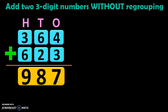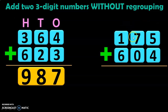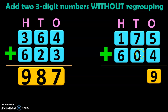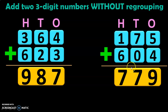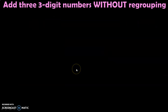Dear viewers, as this is the first topic we are seeing without regrouping in class 3, just for a quick revision, you will have to start your addition from the ones place and move on towards the left. Let us do another example: 175 plus 604. Write down the place values: ones, tens, and hundreds, and start adding from the ones place. 5 plus 4 will give you 9. 7 plus 0 will give you 7. 1 plus 6 is 7. So, 175 plus 604 will give you the answer 779.